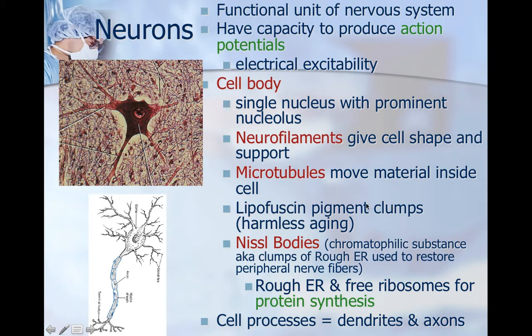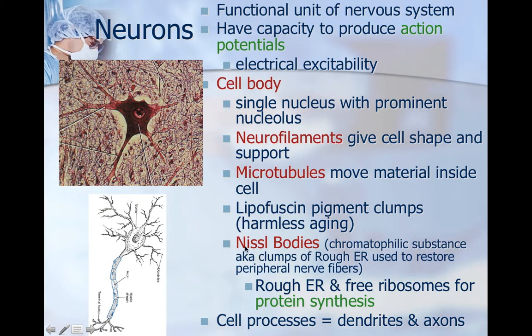Lipofusion pigment clumps and it's harmless when aging. The Nissl bodies, which are the chromatophilic substance, are clumps of the rough endoplasmic reticulum used to restore the peripheral nerve fibers. The rough endoplasmic reticulum and free ribosomes are for protein synthesis in the neurons. And the processes, or the things that stick off of the neuron, are called dendrites and axons.